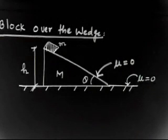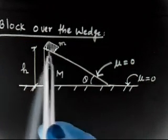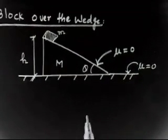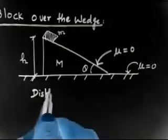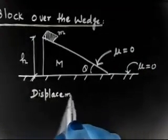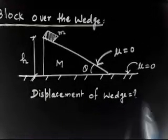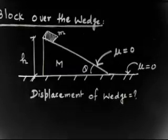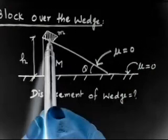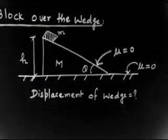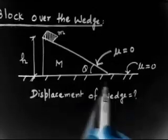Let me read the question. This says: a block of mass m is released from the top of the wedge of mass capital M. So this mass is initially at rest and now it is released, so it starts going downward. We have to find the displacement of the wedge on the horizontal ground when the block reaches the bottom.